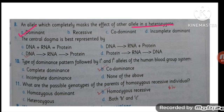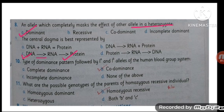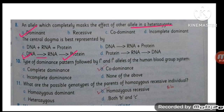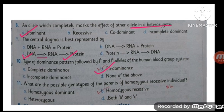The central dogma is: DNA, then RNA, and then proteins are going to be formed. MCQ number 10: the type of dominant pattern followed by alleles A and B of the human ABO blood group system is co-dominance, because both alleles are going to express their appearance.